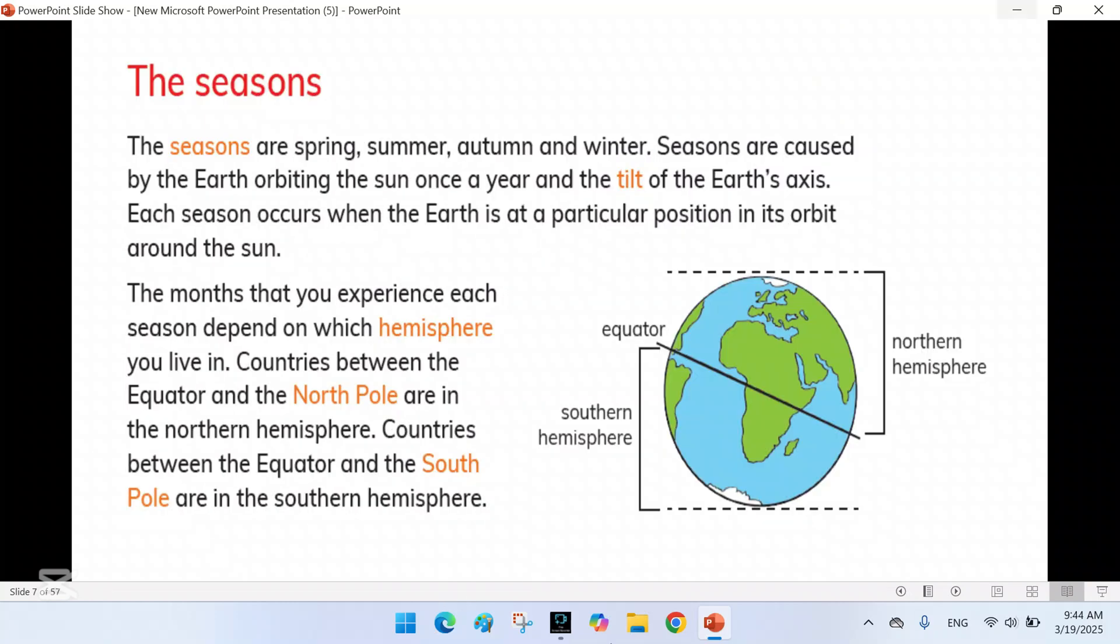Next we have the seasons. Seasons are caused by the Earth's tilt on its axis as it orbits the sun. The Earth's axis is tilted at an angle of 23.5 degrees, which means that different parts of the Earth receive varying amounts of sunlight throughout the year.